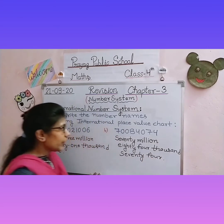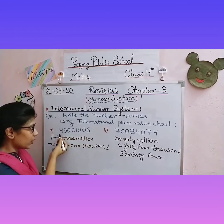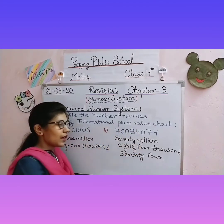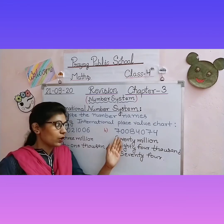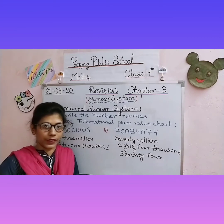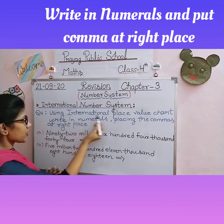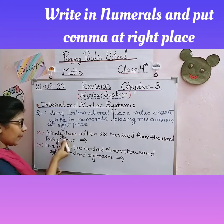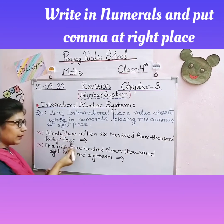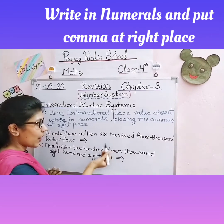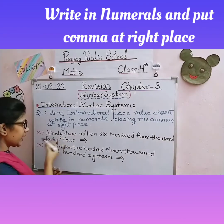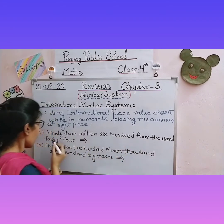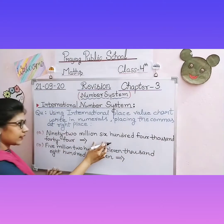Place the given numerals very carefully according to the Place Value Chart, then write them in number name form. Remember: use the International Place Value Chart — do not get confused and do not solve it according to the Indian Place Value Chart. The last type of question: using the International Place Value Chart, write numerals placing commas at the right place. Here the number name is given in words and we have to write it as a numeral.